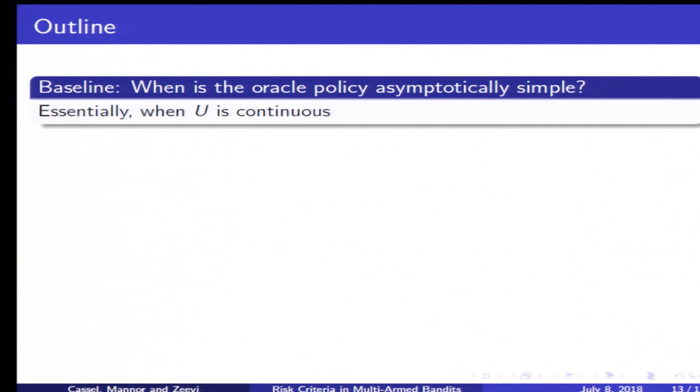Just as a general outline for how we accomplish this: first of all, as a baseline, we want similarly to the mean variance case to ask what properties of U do we need in order to get that the oracle policy is approximated, at least asymptotically, by a single arm policy. Essentially we achieve this by simply requiring that U is continuous—there are some subtleties but this is the essence of it. This provides us a baseline for regret analysis.